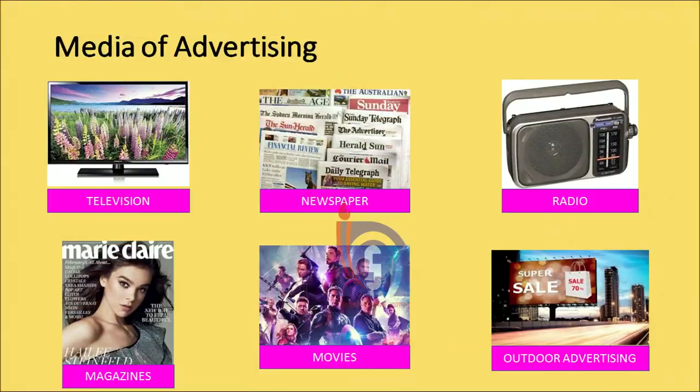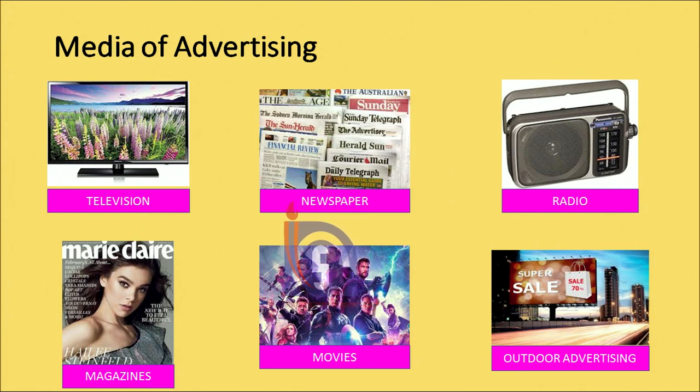Advertisement can be done through various media channels — meaning the source or form through which the message reaches the consumer. Media channels can vary from television, newspaper, radio, magazines, and even movies, where companies place their products indirectly in certain scenes. There are also outdoor advertisements on railway platforms, metro platforms, in buses, and even on roads.